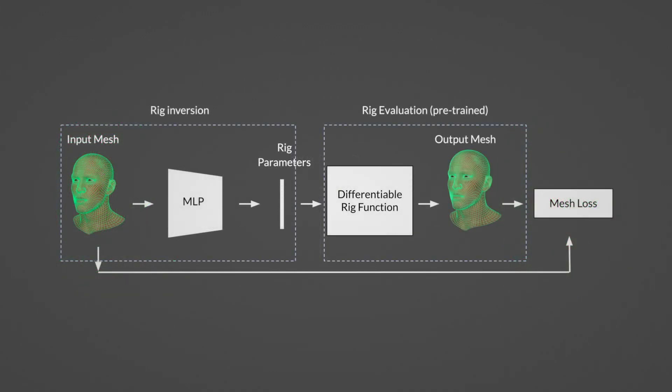Here is our proposed solution to solve this problem using a deep learning model. First, we pre-train a rig function model to produce the same result as the rig. We then freeze this model and use it to train the rig inversion model with a loss that is in mesh space.